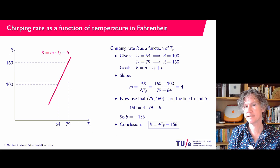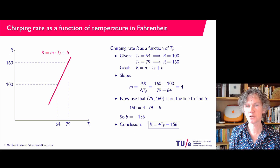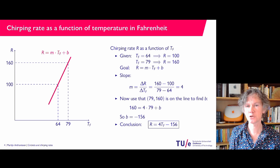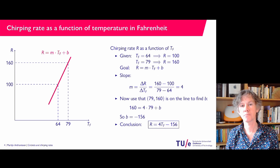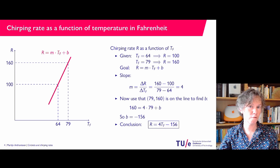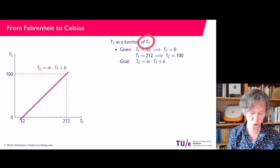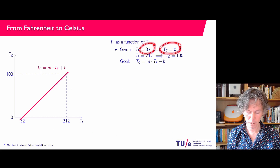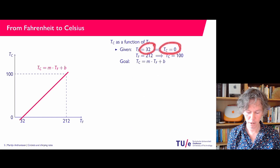Now I would like to extend this a little. I'm going to look for a similar relationship, but using Tc, the temperature in Celsius. To do that, I make one step in between: conversion from Fahrenheit to Celsius. I would like to write Tc as a function of Tf. I have two data points: Tf equals 32 is the freezing temperature of water, which is zero in Celsius; and 212 degrees Fahrenheit is the boiling temperature, which is 100 in Celsius.